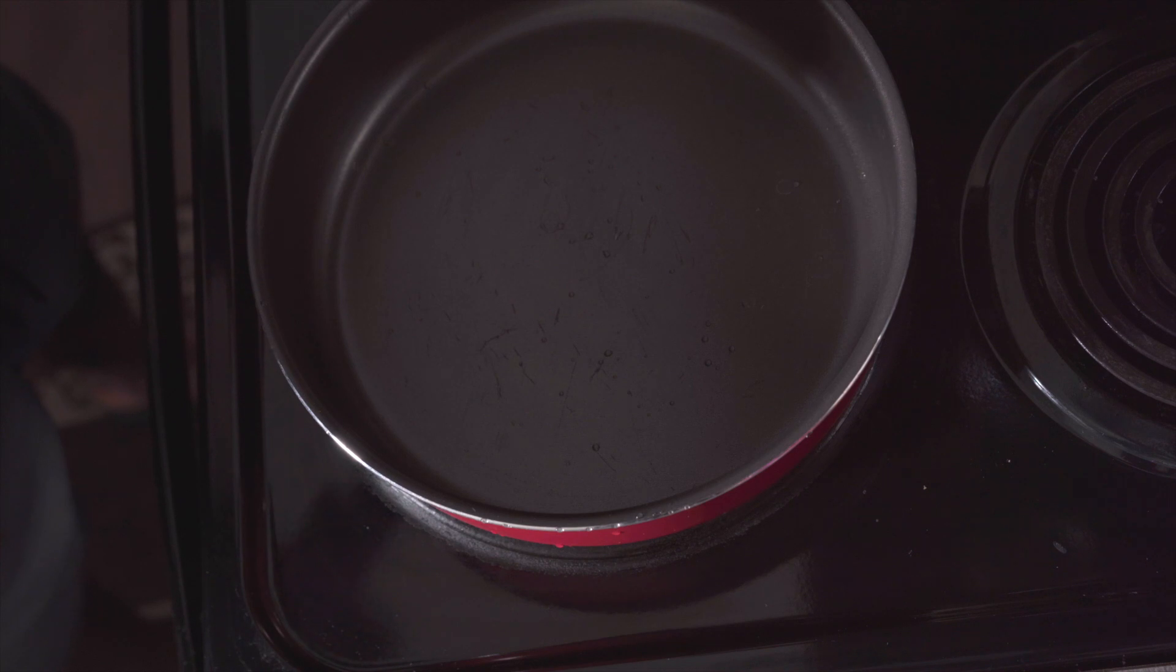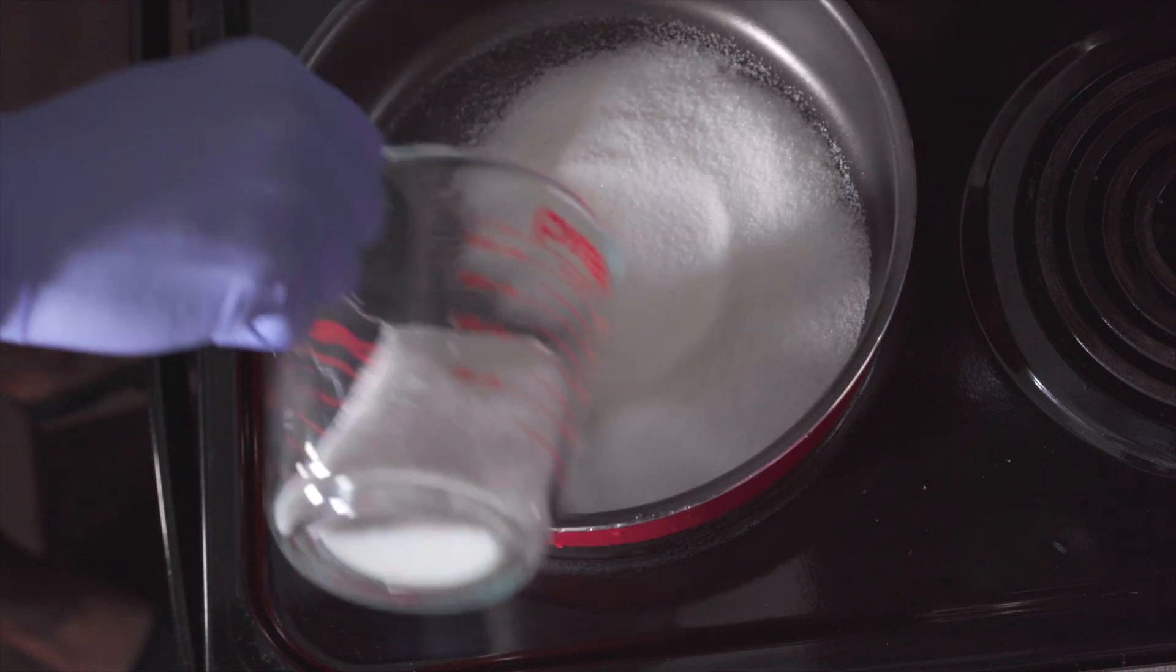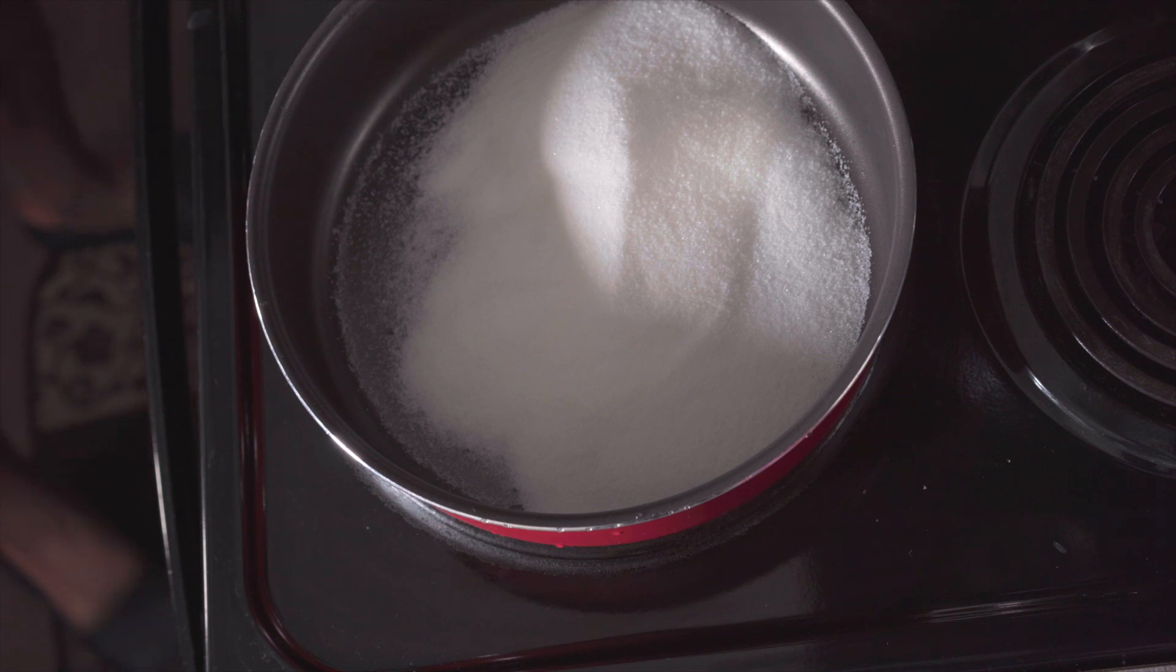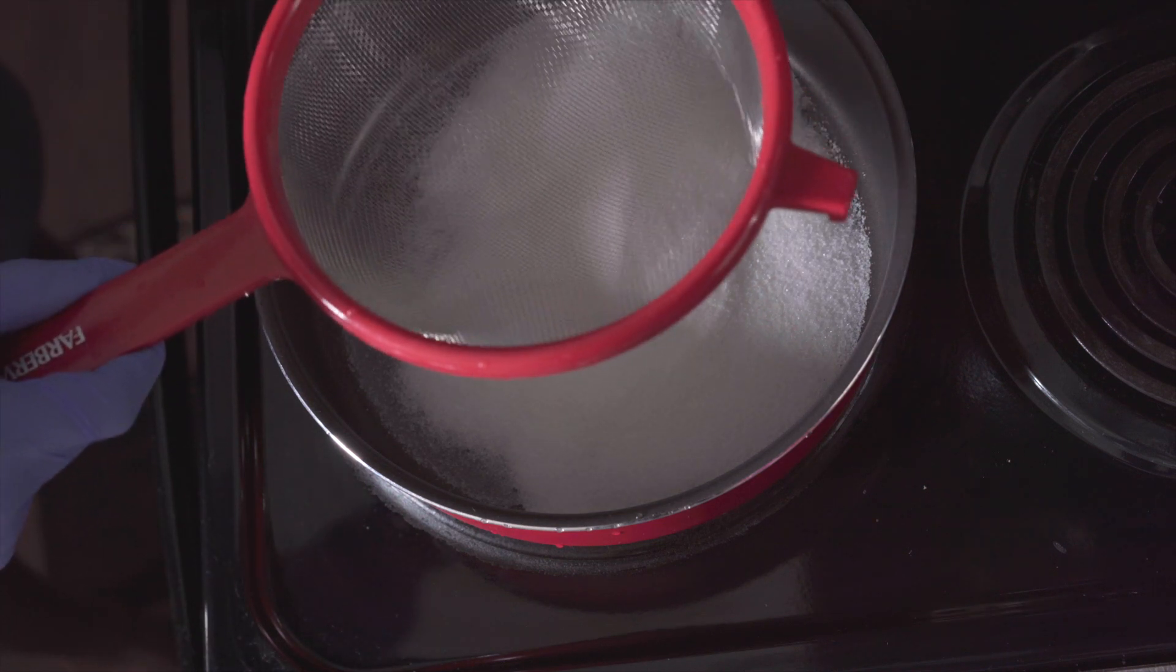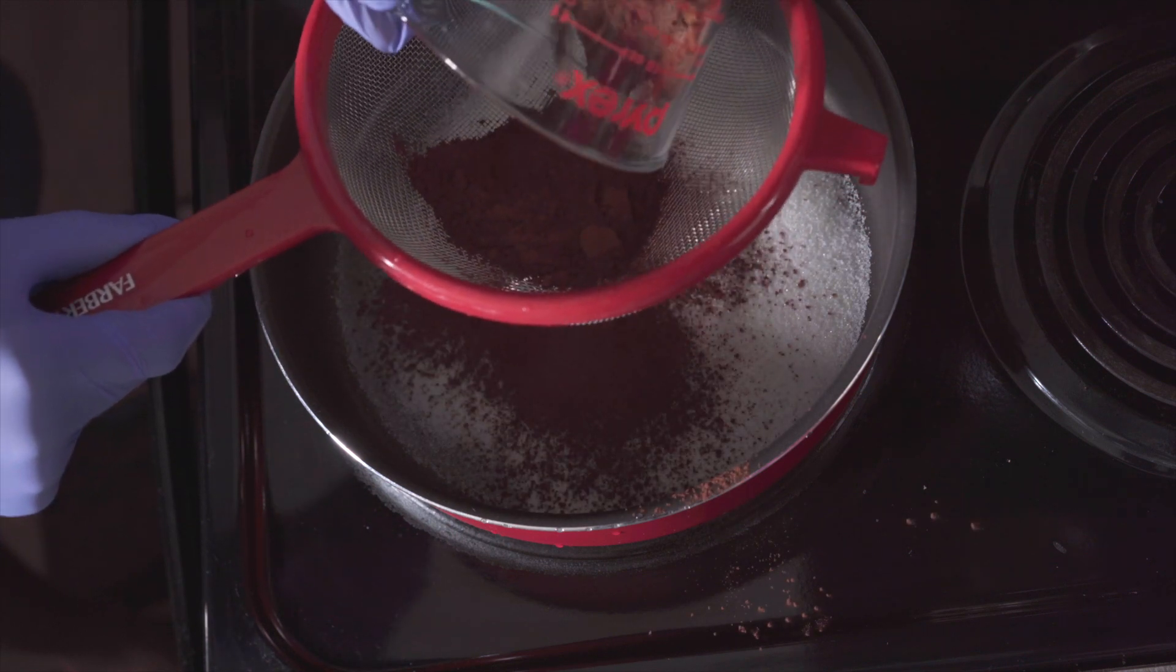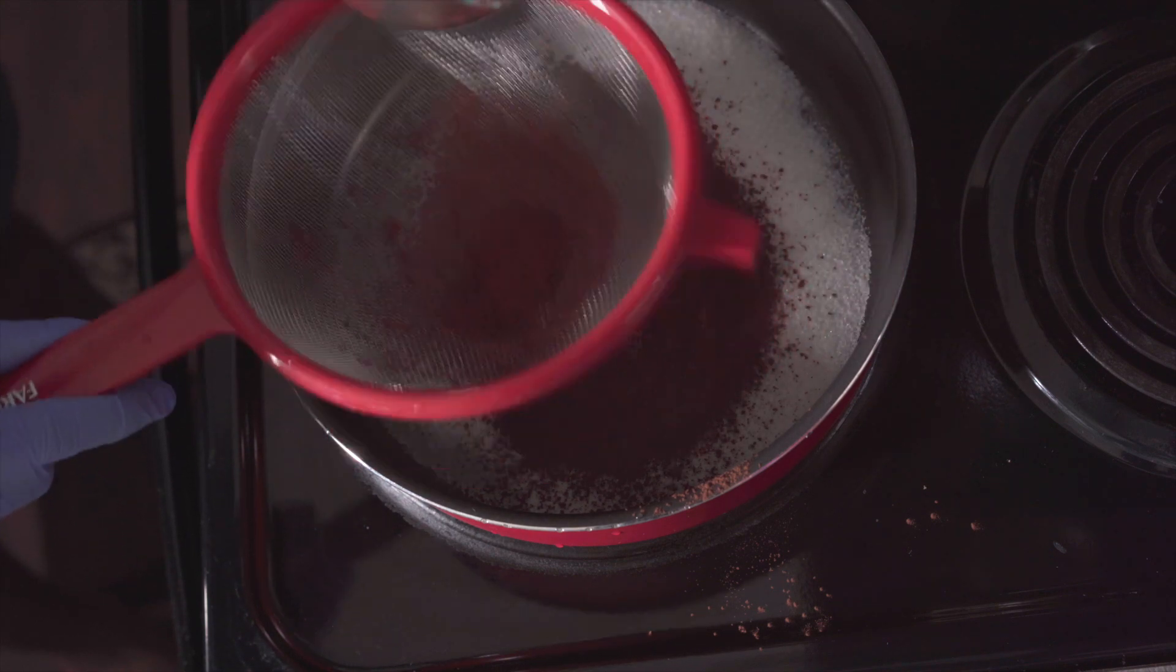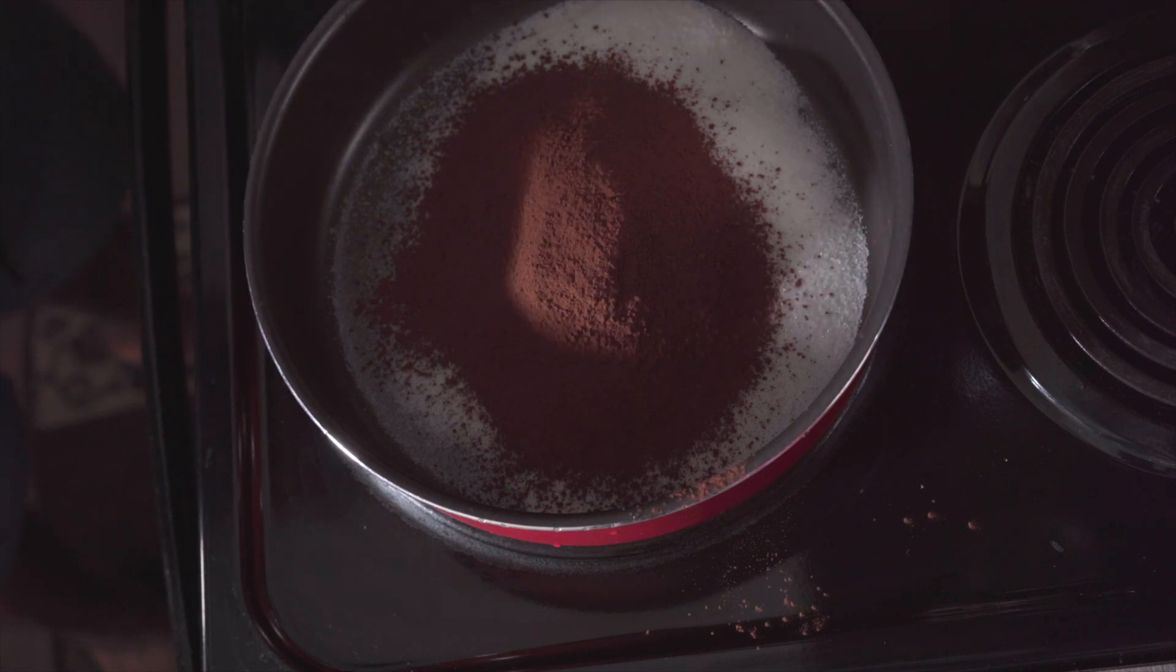Alright guys, so we're going to start off by adding our cocoa powder and our sugar to our pot. Now we're going to add our cocoa powder to our sugar. Now we're going to mix this together.